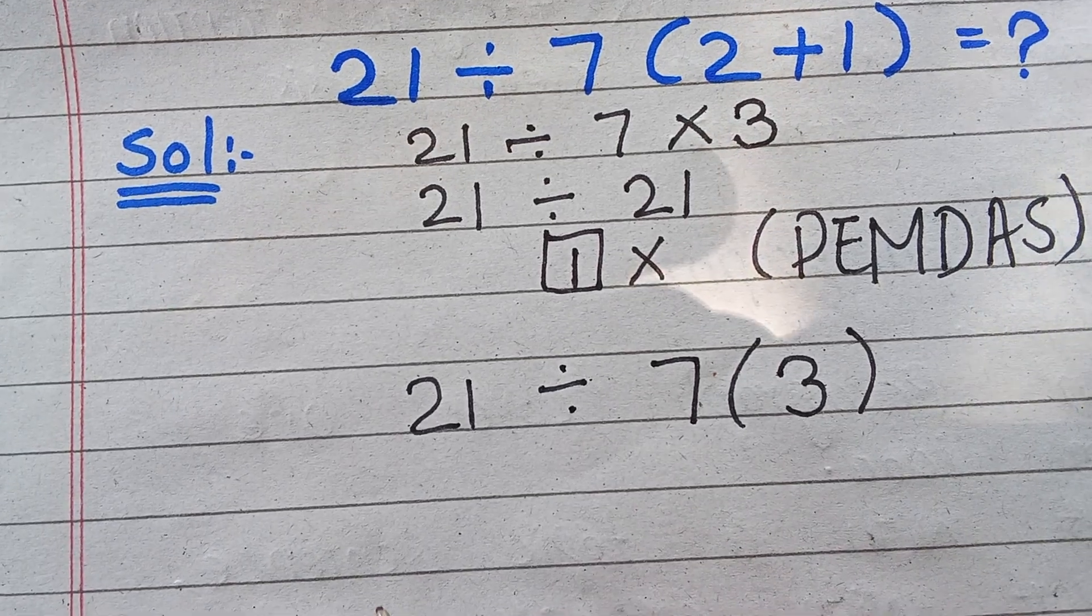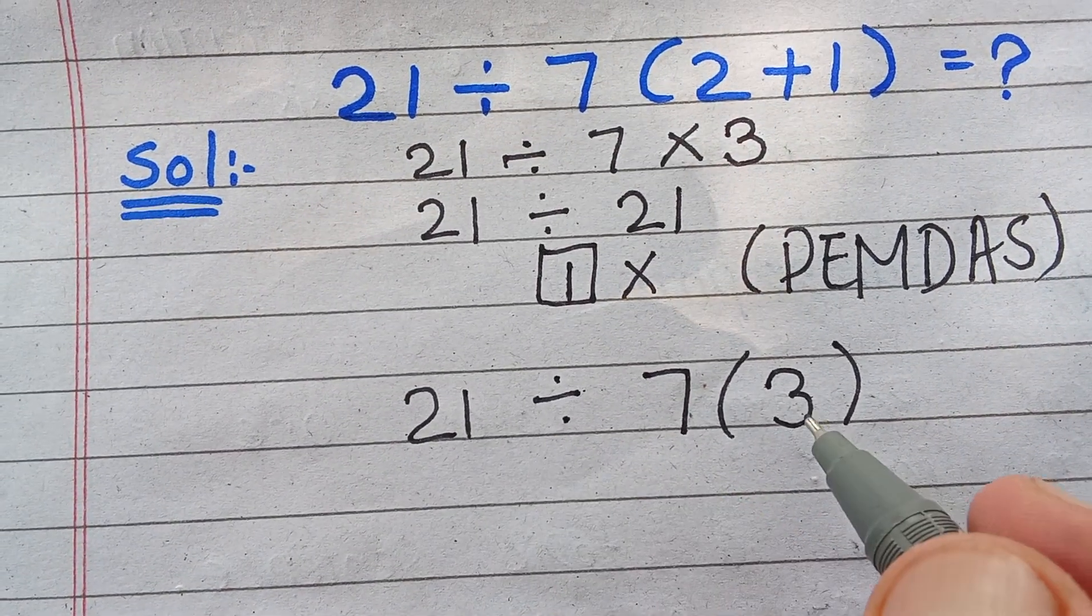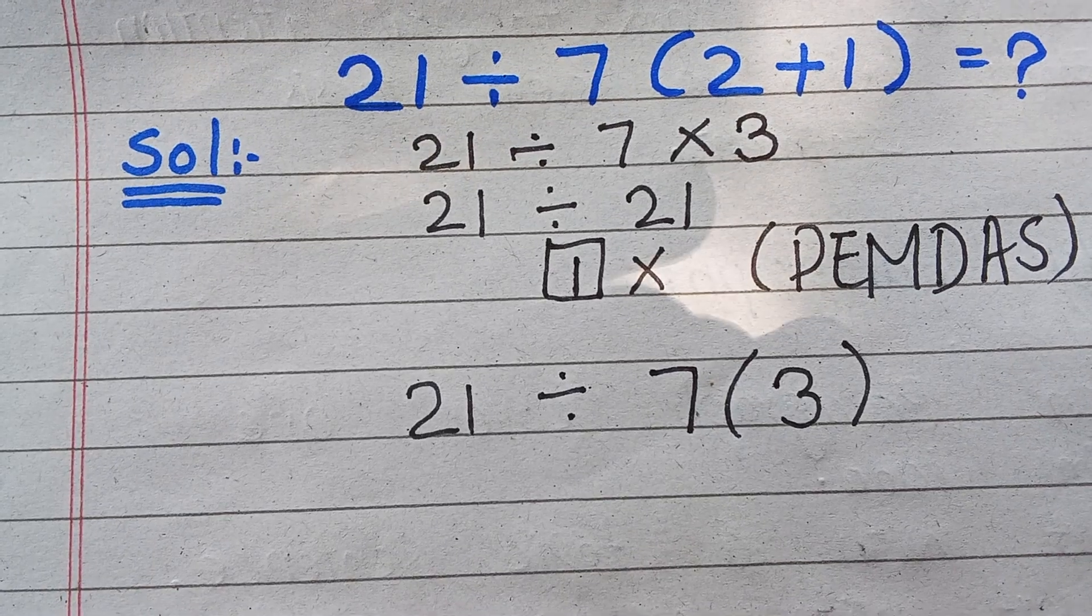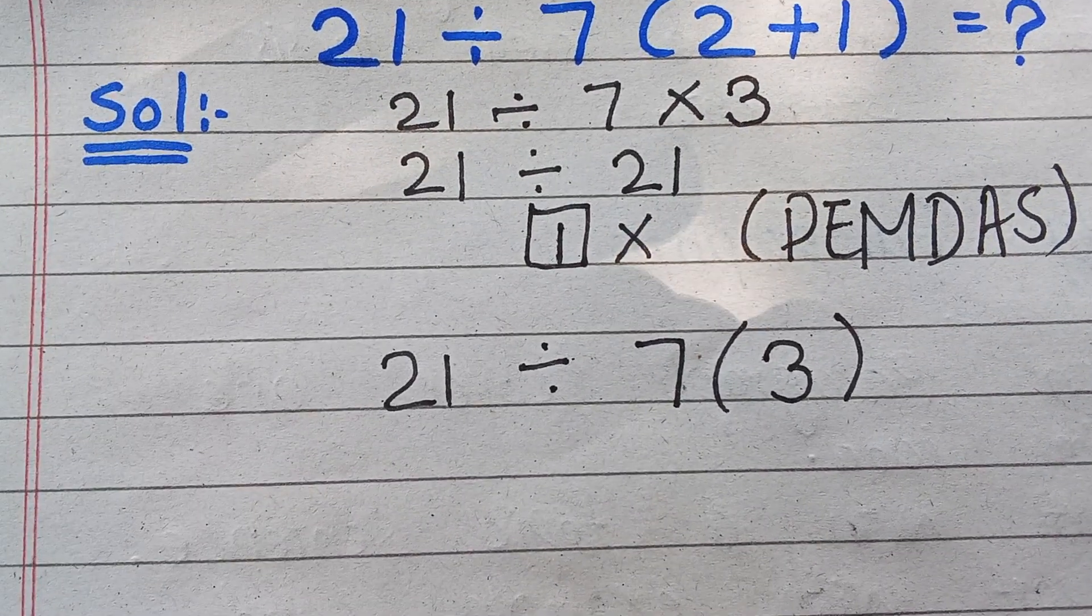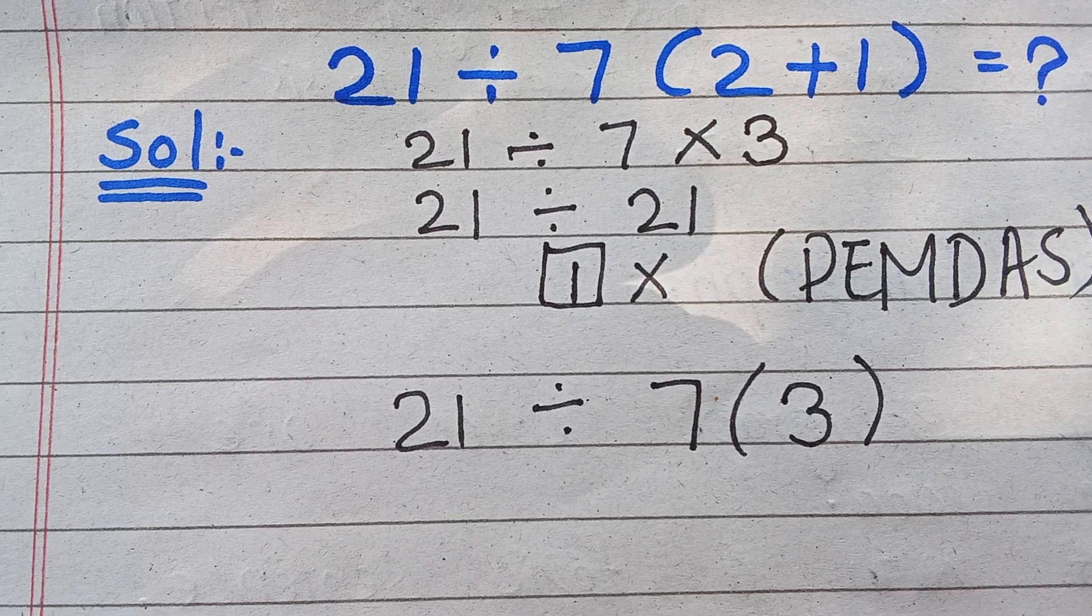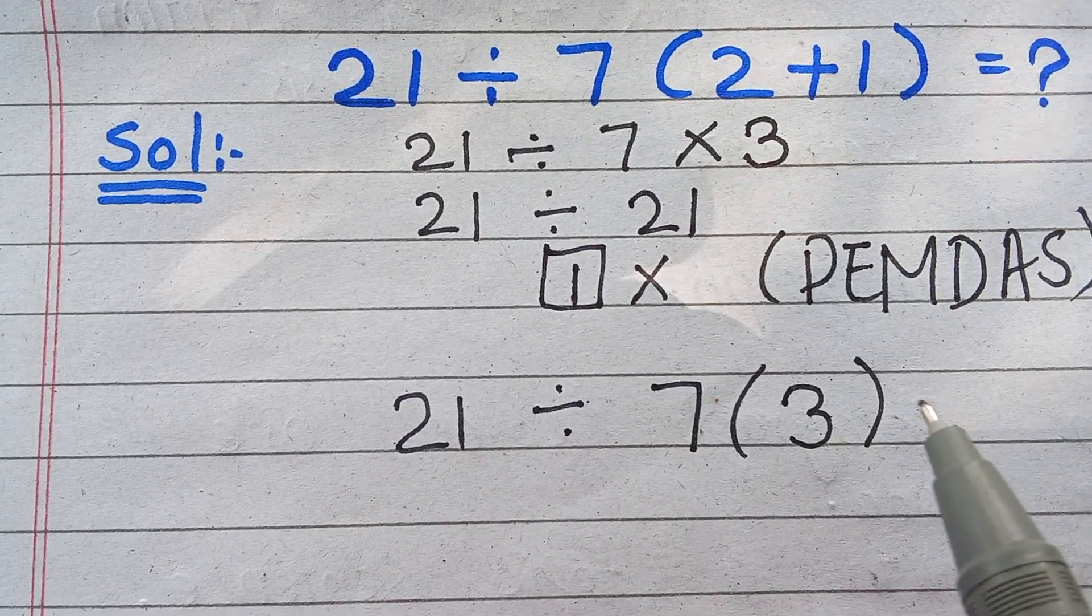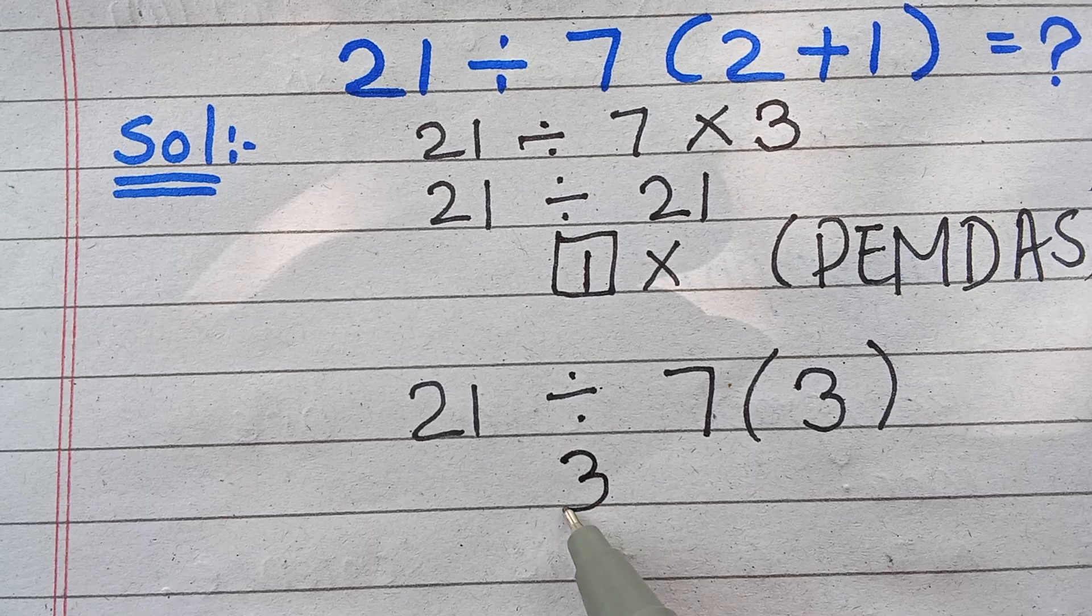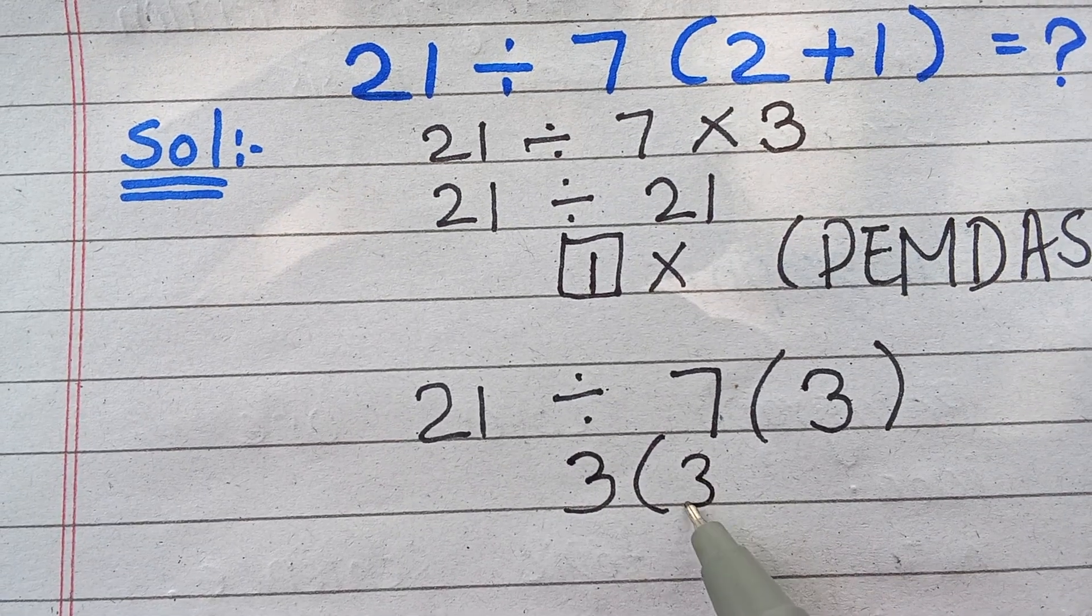Now in this expression, one division and one multiplication are present, but multiplication and division have equal priority, and we solve from left to right. So 21 divided by 7 equals 3, times 3.